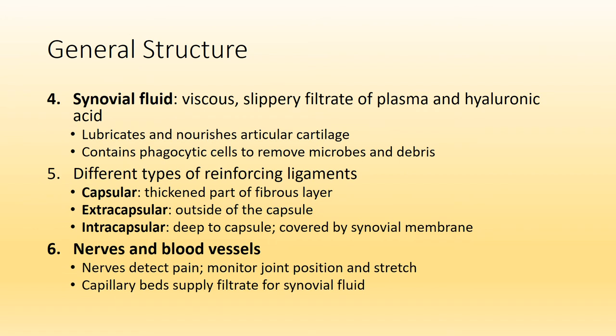Another characteristic of the synovial joint structure is the synovial fluid. It is produced by the synovial membrane and its purpose is to lubricate or reduce friction along the two moving bones. Within this fluid we also find plasma, which is part of blood, hyaluronic acid, as well as phagocytic cells to engulf and digest certain microbes as well as debris.